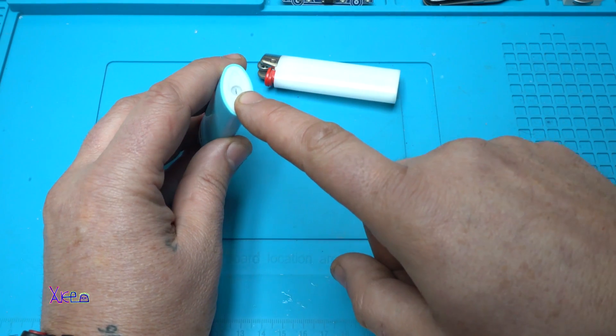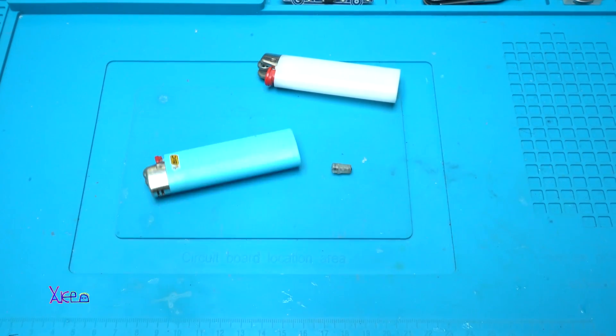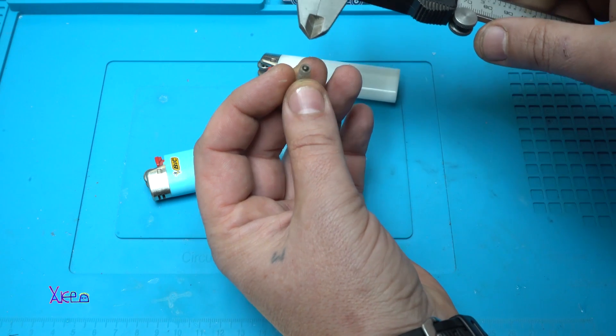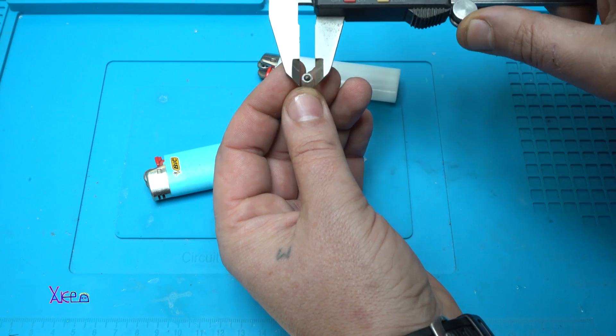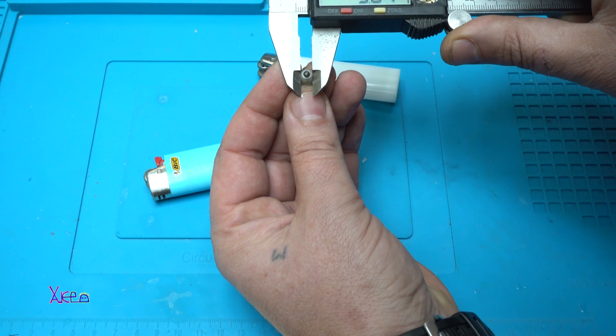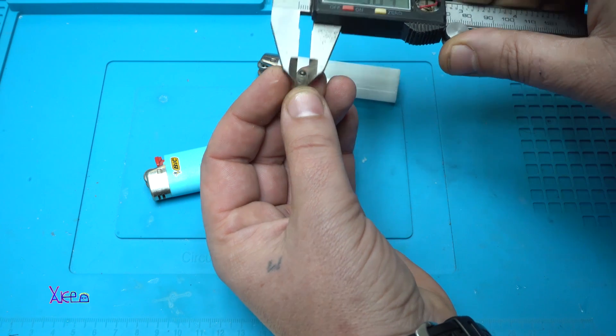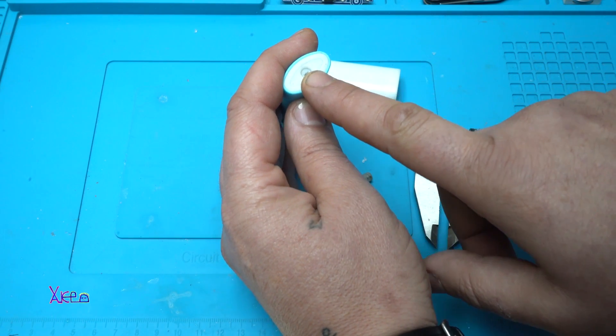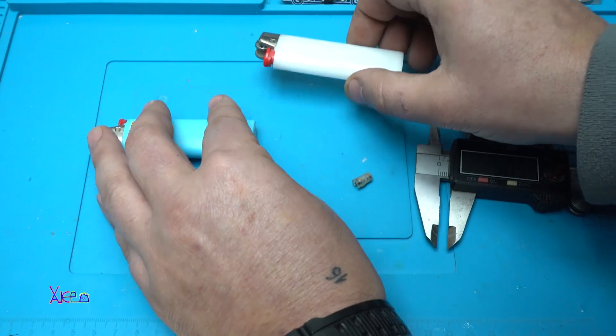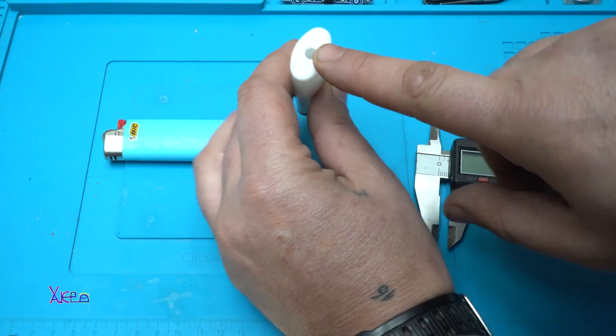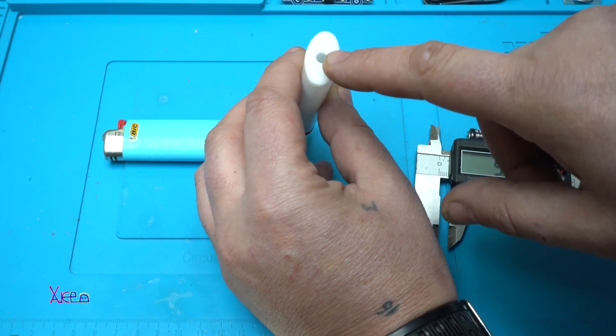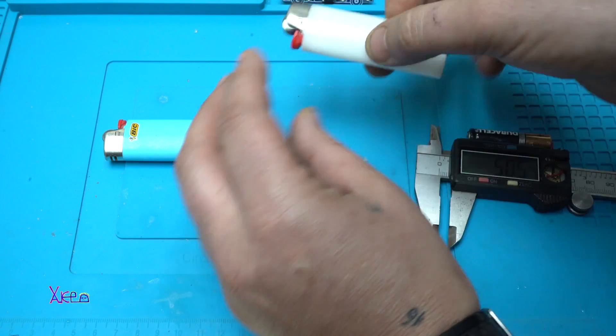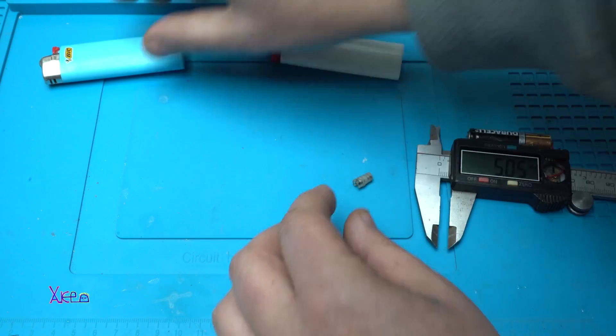Okay, and the next thing you need, at the bottom of the lighter you need to drill a hole. And before drilling you need to measure the diameter of the valve. This one is five millimeters, so you need to drill a hole with a five millimeter drill bit. I have already done that, here it is.